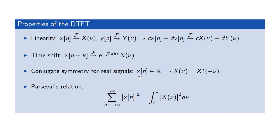Another property is conjugate symmetry for real-valued signals. If we have a signal x[n] which is real-valued and we take the transform, the transform will be conjugate symmetric. This is seen when we plot the transform for real-valued signals — we typically plot the absolute value, and that will look symmetric. A fourth property is Parseval's relation, which states that the transform is energy-preserving: taking the absolute value squared of x[n] and summing over all time yields the same value as integrating the absolute value squared of X(ν) over the interval 0 to 1.